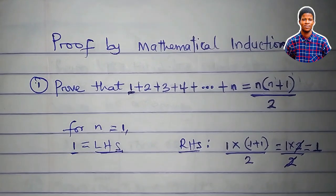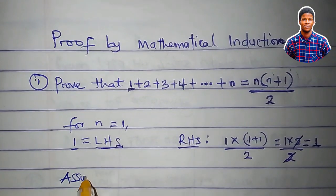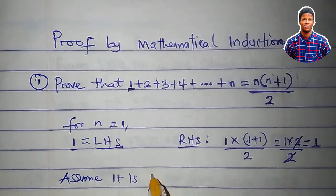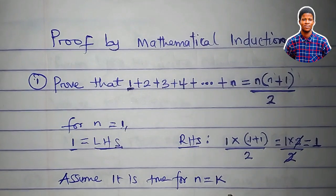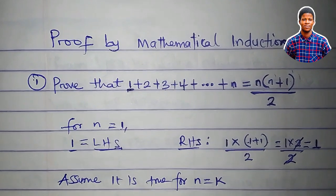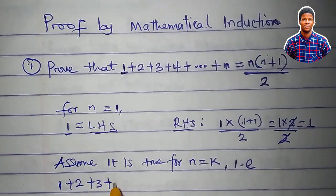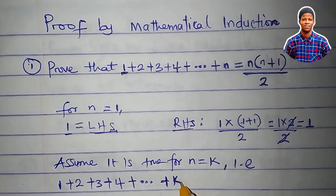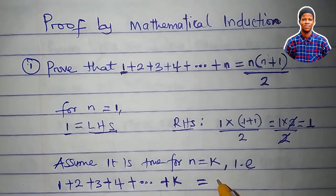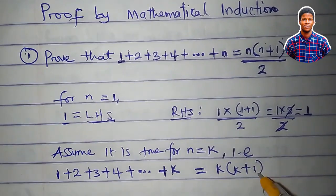In the second step, we will assume that it is also true for n equal to k. k is any positive number. So 1 plus 2 plus 3 plus 4 plus k, in place of n, is equal to k times k plus 1, all over 2.